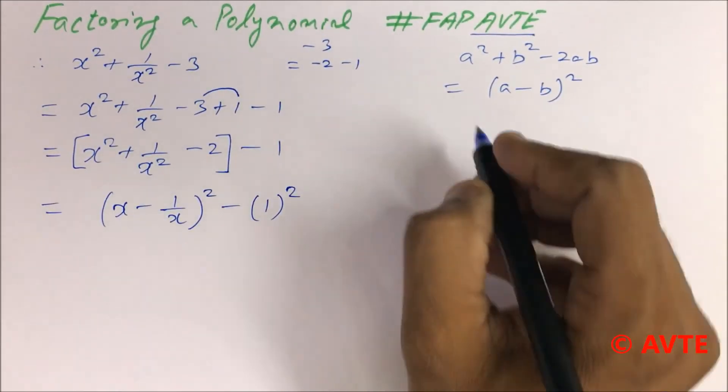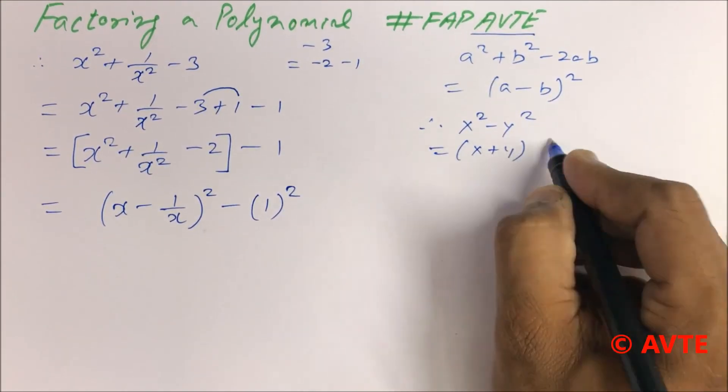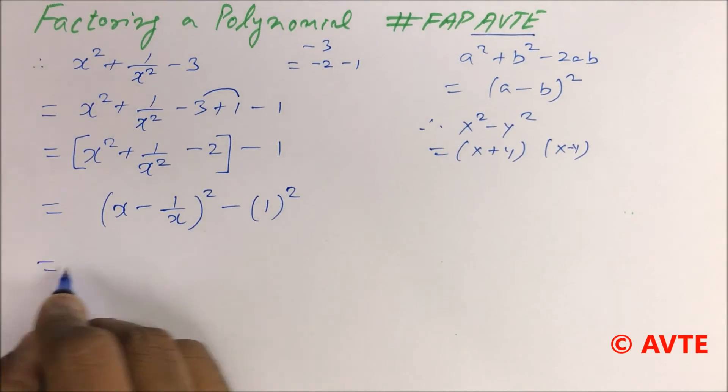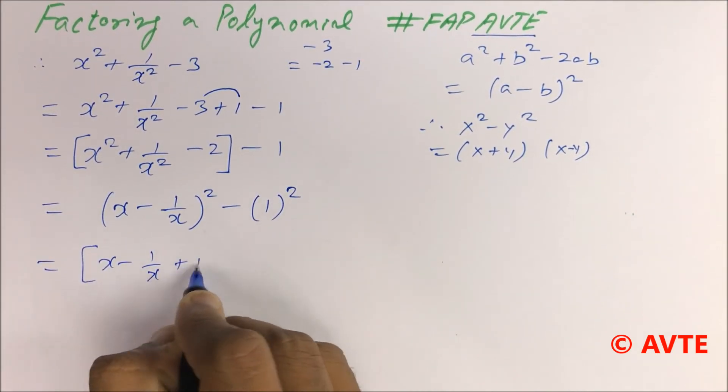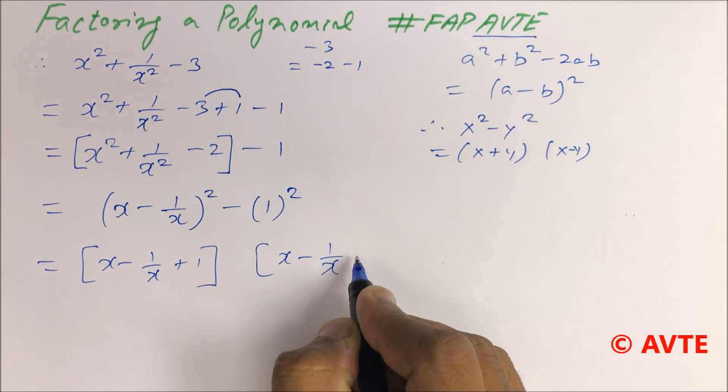As you know that x square minus y square is always x plus y and x minus y. So here it is x minus 1 by x plus 1, and it is x minus 1 by x minus 1.